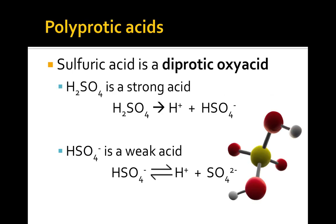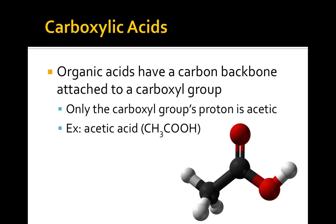Some acids, like phosphoric acid and sulfuric acid, are called polyprotic acids because they have more than one proton that they can donate in Bronsted-Lowry acid-base reactions. These protons are removed one at a time. Sulfuric acid is a diprotic acid because it has two acidic hydrogens, seen here in the 3D model as the white atoms on either end. It's also unique because the first proton removed is a strong acid. The hydrogen sulfate ion formed is a weak acid. Sulfuric acid is also an oxyacid because it contains oxygen atoms in the formula. Carboxylic acids are organic molecules where the hydrogen in the carboxyl group is the acidic hydrogen; the hydrogens attached to carbon atoms are not removed in acid-base reactions.